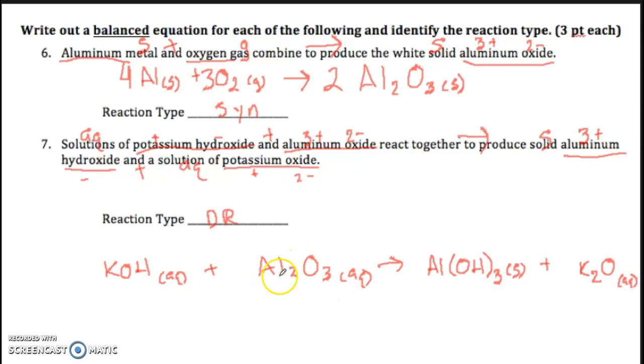And then to balance this thing, well, I've got two aluminums right here, so I actually need a two there to begin with. And then that gives me two times three for six OHs. So I'm going to have to come over here and put a six right there. Six Ks. So that needs to be a three for three times two, six Ks. It gives me three O's, and I had three O's. So that one is all balanced. Six, one, two, and three.